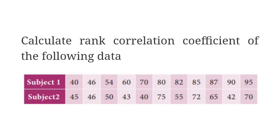Subject 1 is considered as X and Subject 2 as Y. The X values (Subject 1 marks) are: 40, 46, 54, 60, 70, 80, 82, 85, 87, 90, 95. The Y values (Subject 2 marks) are: 45, 46, 50, 43, 40, 75, 55, 72, 65, 42, 70.